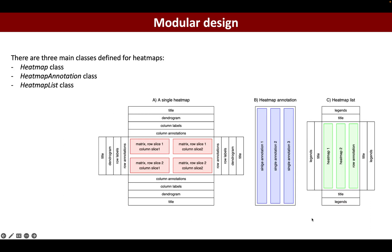The ComplexHeatmap package has a modular design. It was implemented in an object-oriented way. There are three main classes defined for heatmaps: the Heatmap class which defines a single heatmap, Annotation class which defines the heatmap annotation, and the Heatmap list class which defines a list of heatmaps.